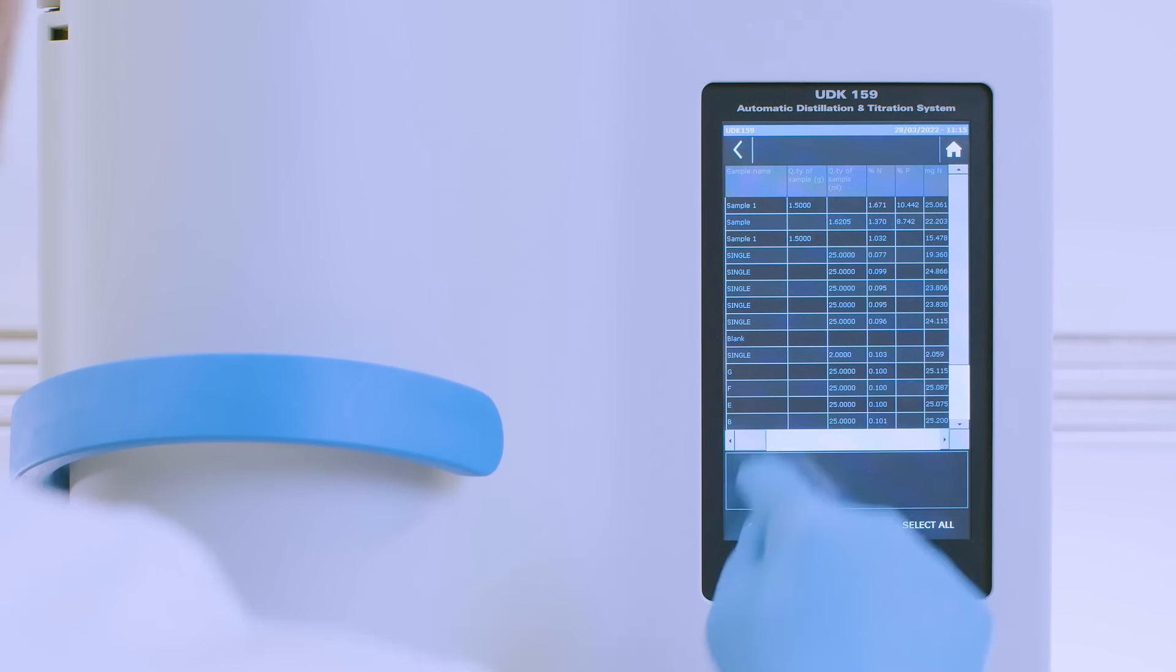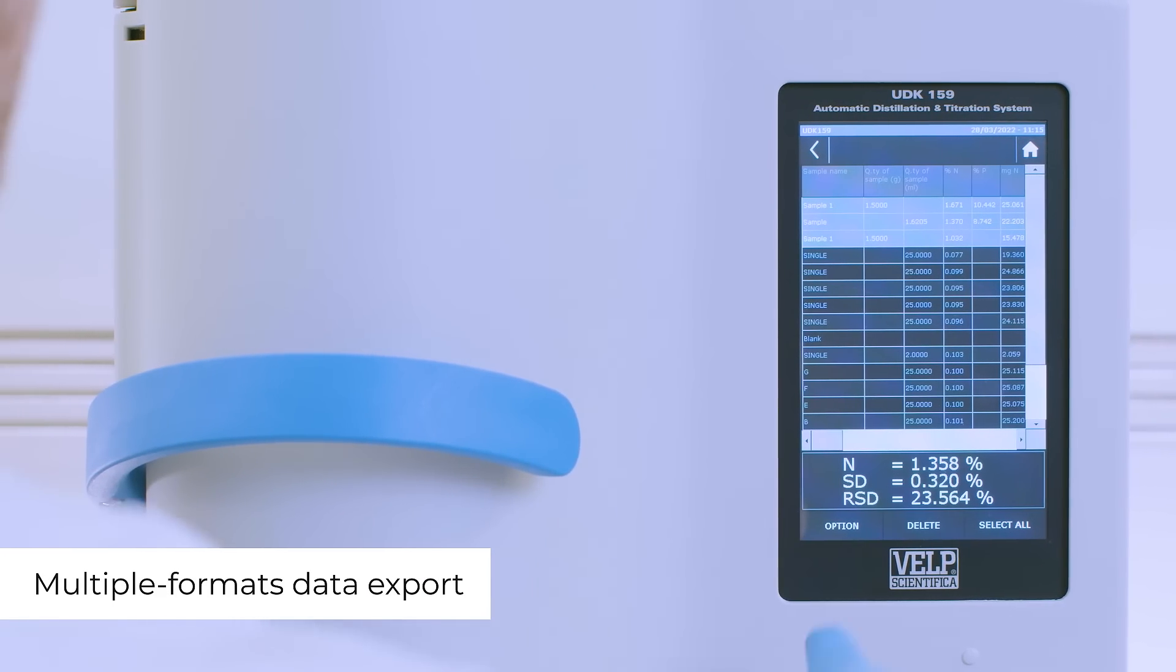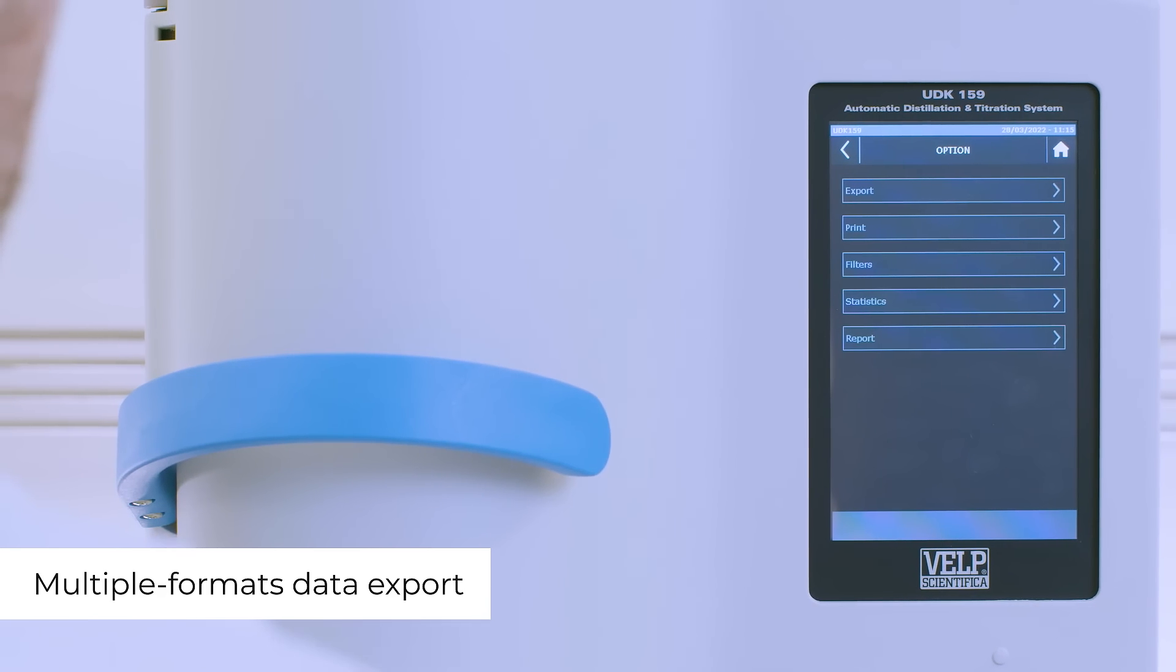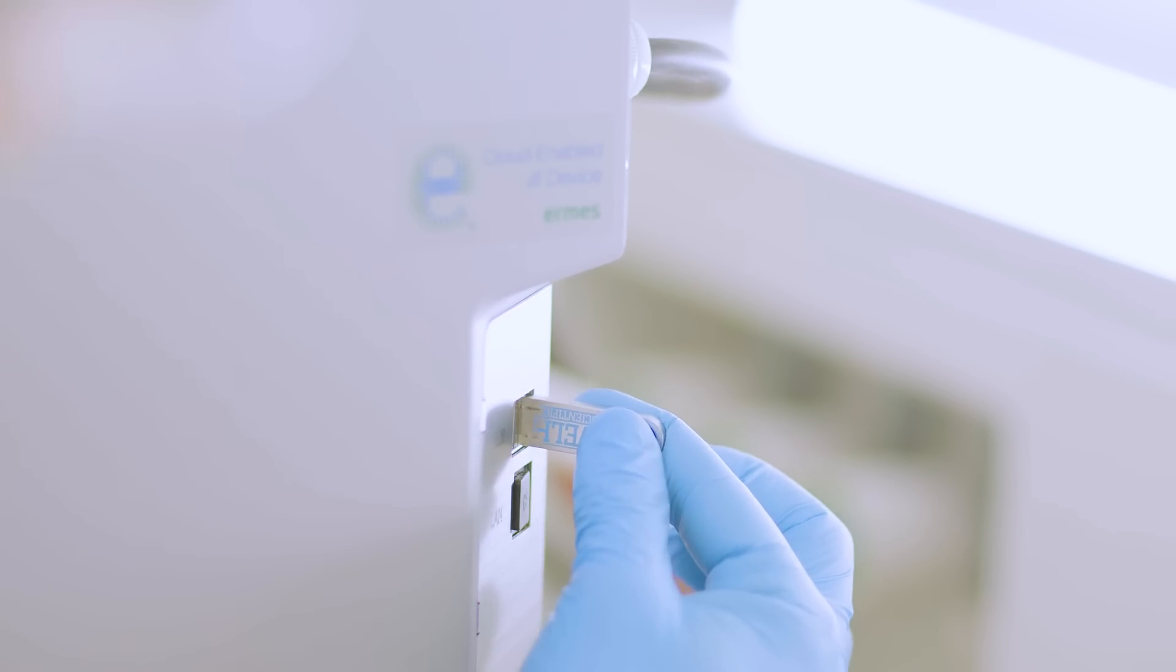The UDK-159 stores the analysis results in the onboard archive. It is possible to export data to a PC and LIMS in multiple formats via USB or Ethernet.